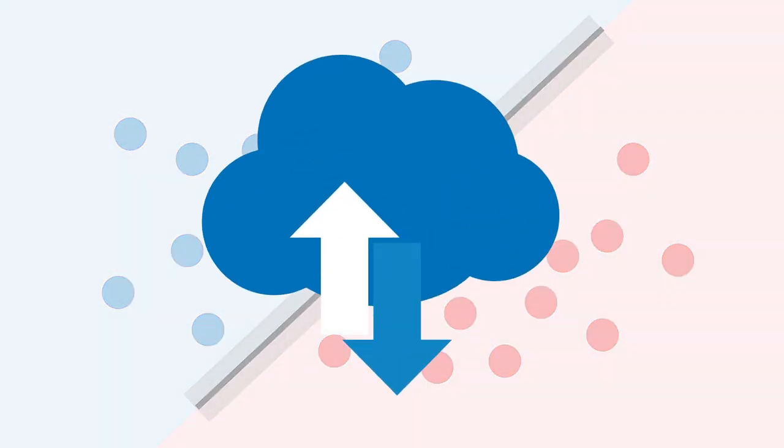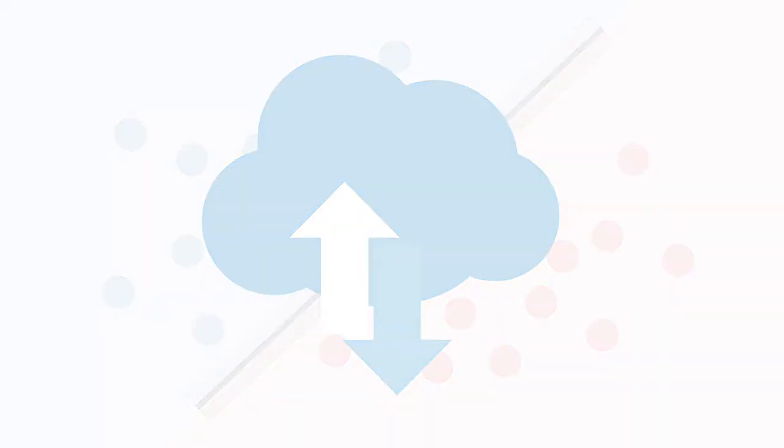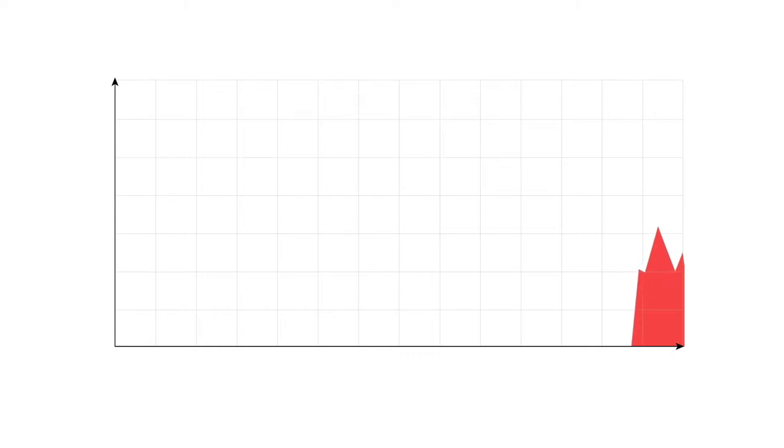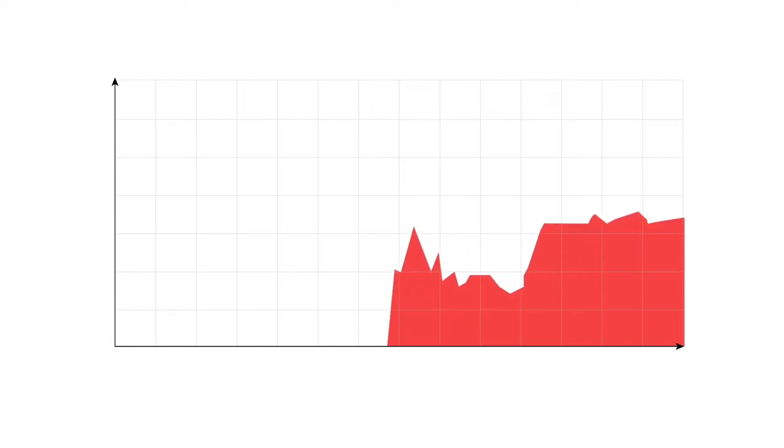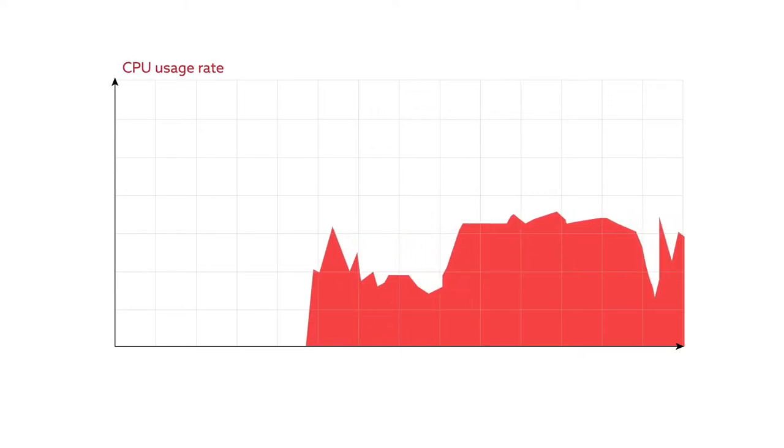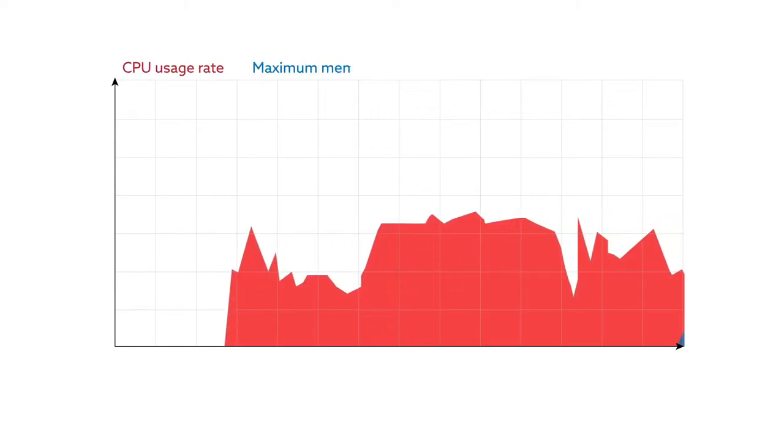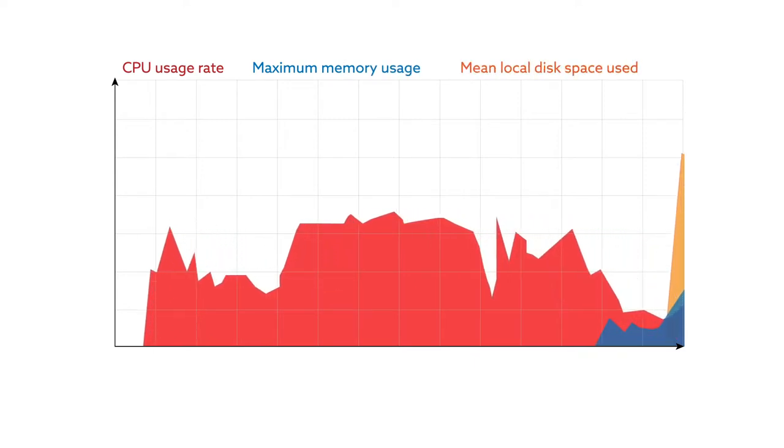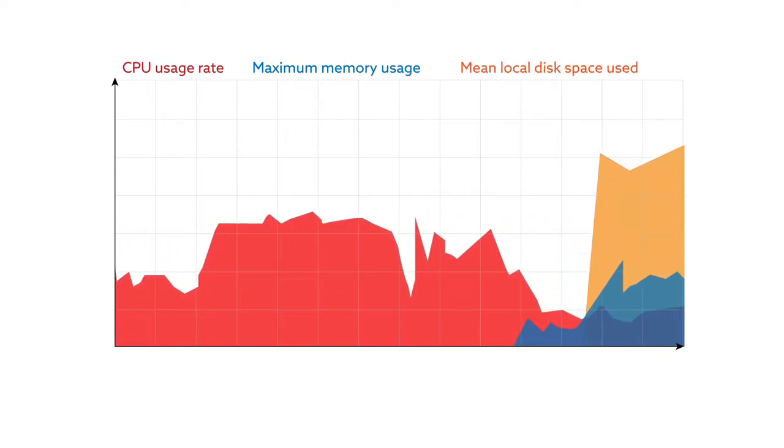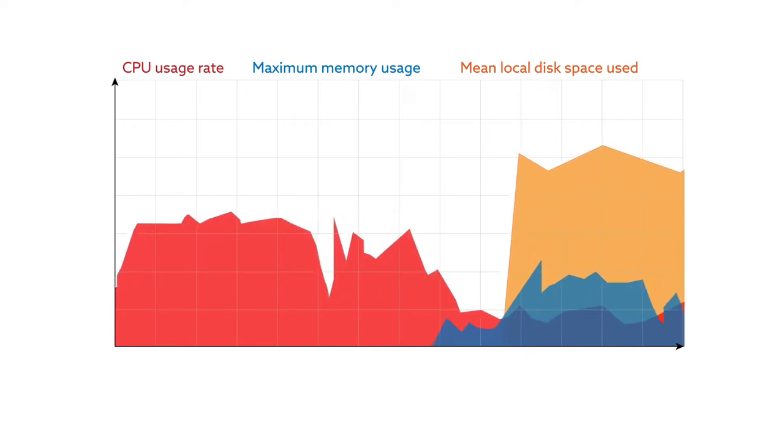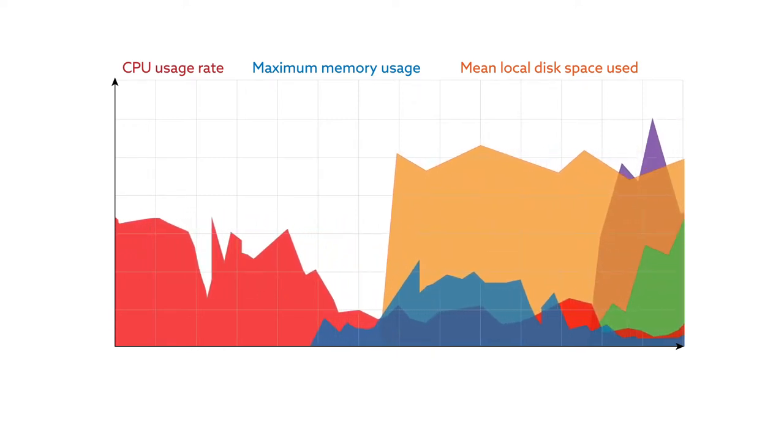In cloud computing, the properties of items to be classified are much more complex than color. When deciding whether a certain computational task is either normal or likely a crash waiting to happen, a support vector machine has to deal with a whole list of priorities, such as CPU usage rate, maximum memory usage, and mean local disk space used, just to name a few. It's not impossible, but the process can be computationally taxing and slow.